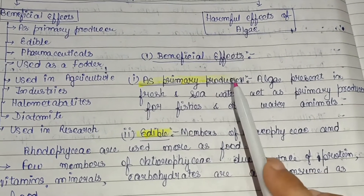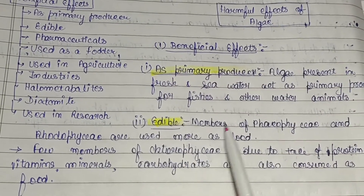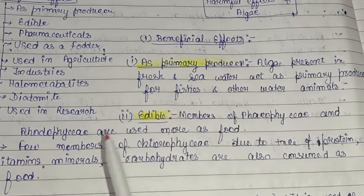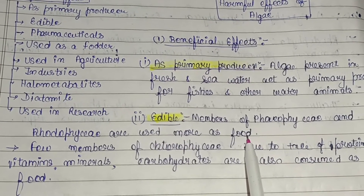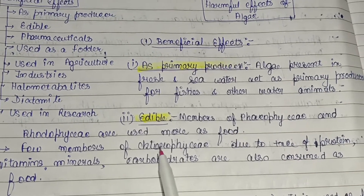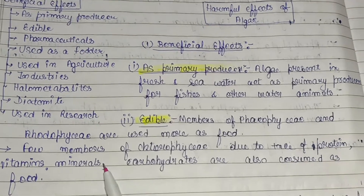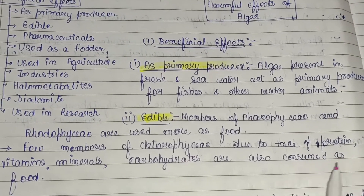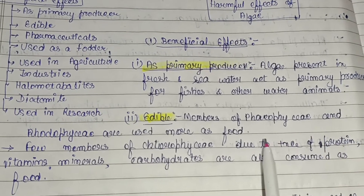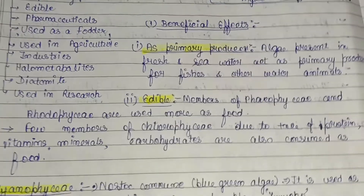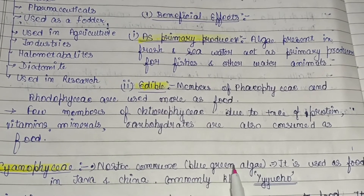As edible organisms, members of Phaeophyceae and Rhodophyceae are used more as food. A few members of Chlorophyceae are also consumed as food due to the presence of proteins, vitamins, minerals, and carbohydrates.